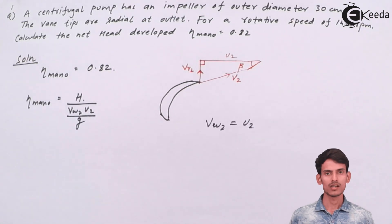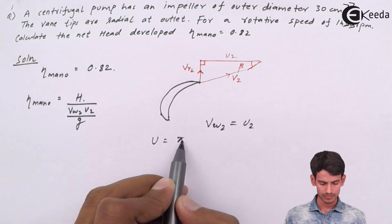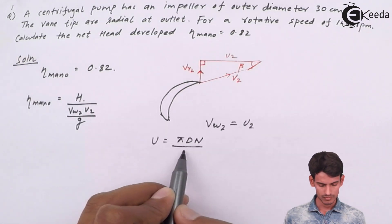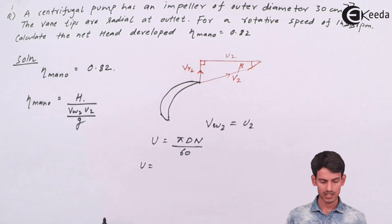Now U2 can be easily calculated based on a simple formula. U is pi d n by 60. The diameter is given.